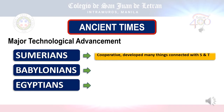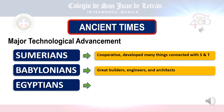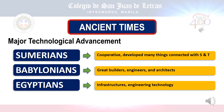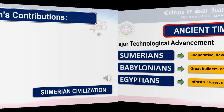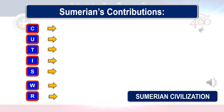Sumerians were known as very cooperative and they developed many things in relation to science and technology. Babylonians were known as great builders, engineers, and architects that contributed a lot to the world. And lastly, Egyptians were known for their infrastructure and engineering that still amaze people today. For Sumerians' contributions, just remember the acronym KUTIS WR.